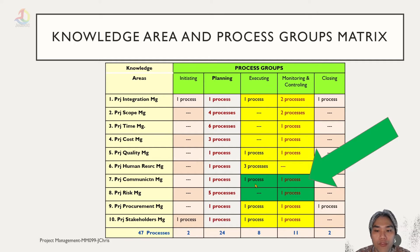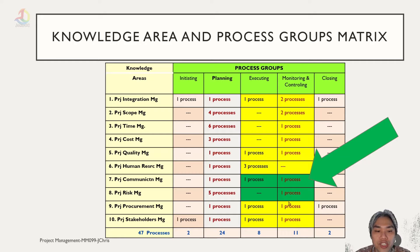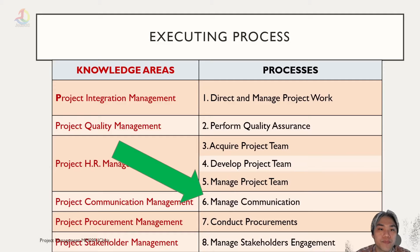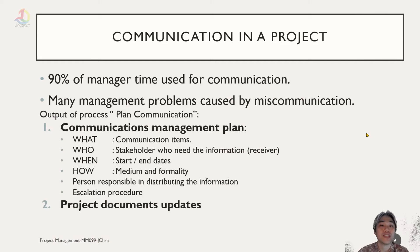Project communication management has one process in the monitoring and controlling process group, and project risk management also has one process in the monitoring and controlling process group. Let's start with the first: project communication management. The process itself is called Manage Communication. In the execution group, 90% of a manager's time is used for communication.